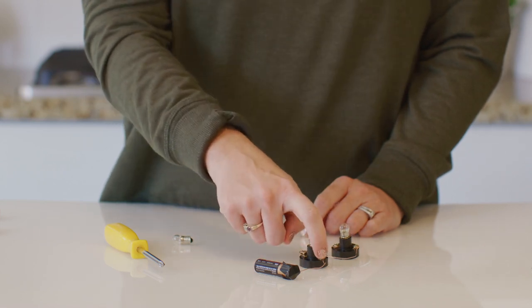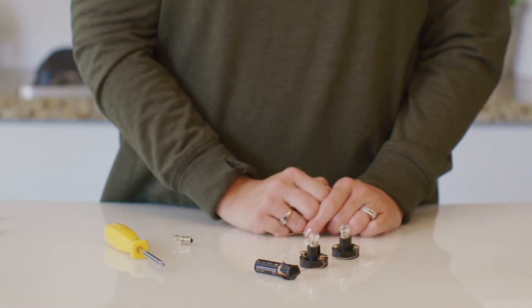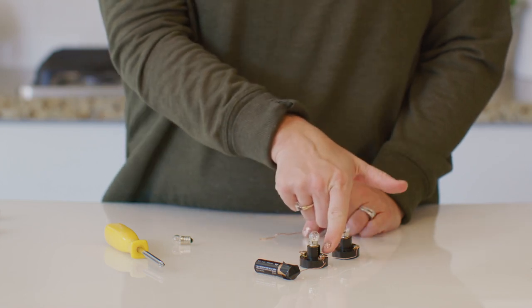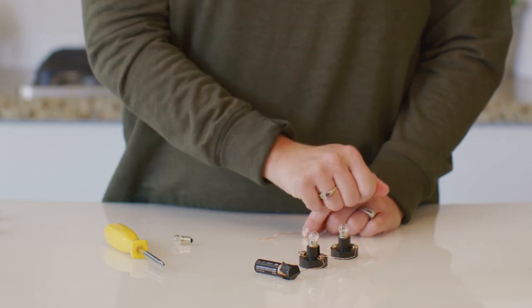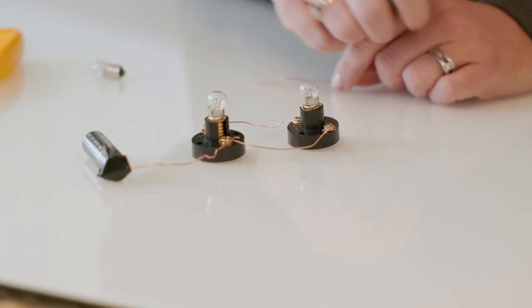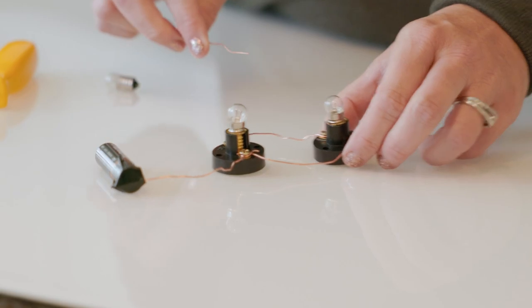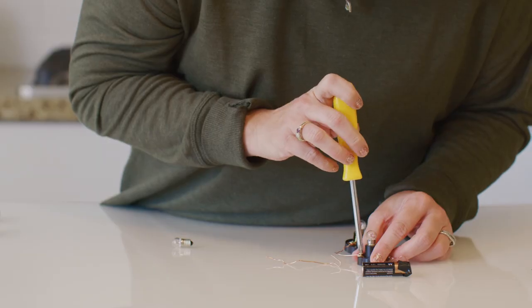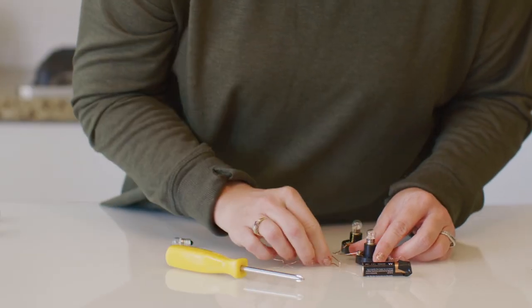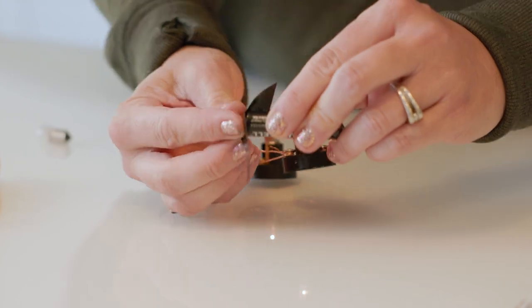I took the wire from one end and connected it to one side of the first light bulb. Then I used another piece of wire and wrapped it around the same screw and connected it to the screw of the other bulb holder. Now let's do the same thing on the other side.